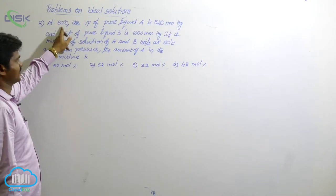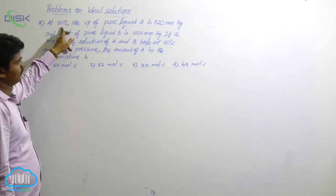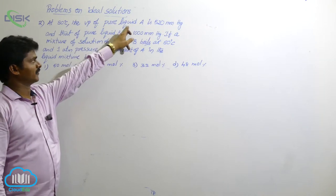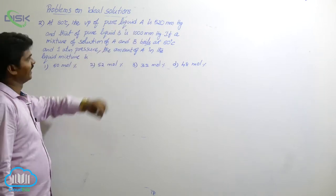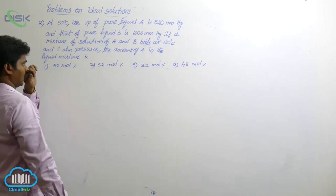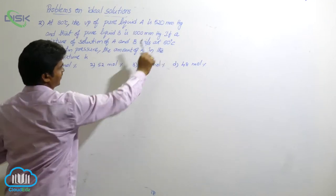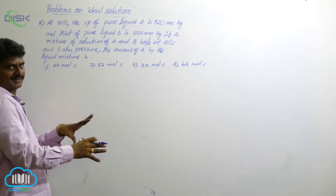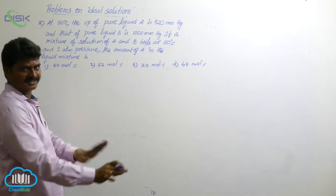In this problem, temperature is 80 degrees centigrade. We are aware of p0A, that means p0A is given. Similarly, p0B is also given. And the initial temperature is 80 degrees centigrade. So the experiment is conducted at 80 degrees centigrade, temperature is given.